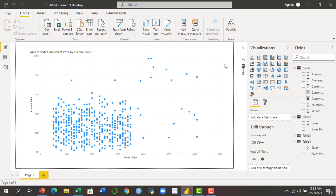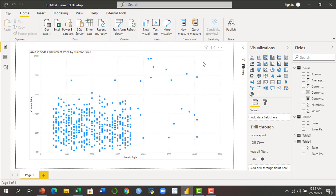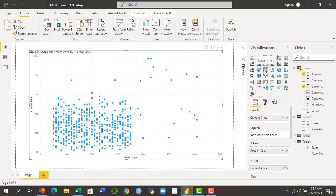We are in Microsoft Power BI application where I have inserted a scatter chart from this visualizations pane. And I have plotted on the x-axis the area in square yards, on the y-axis the current price, and in the details also the current price.